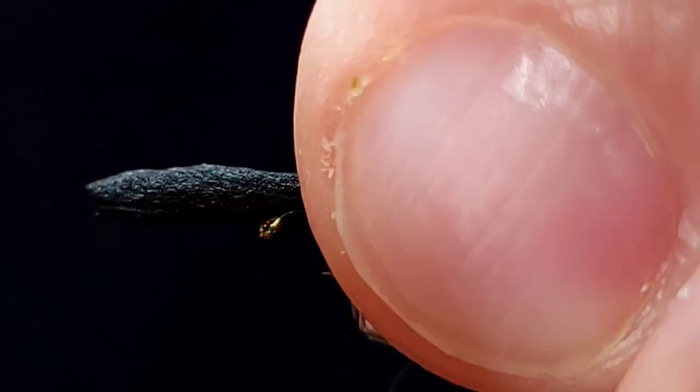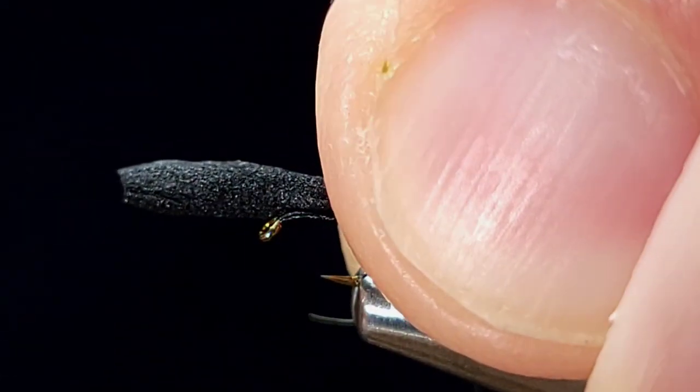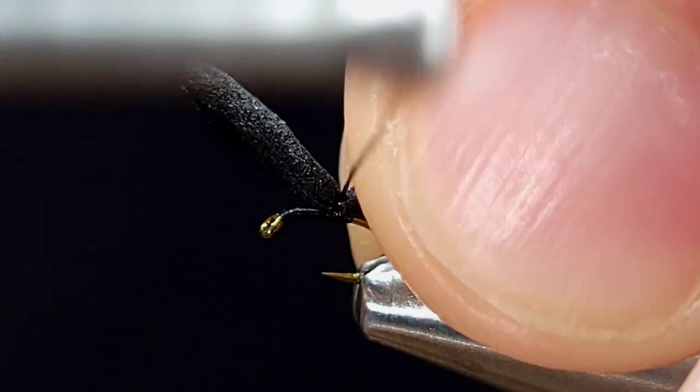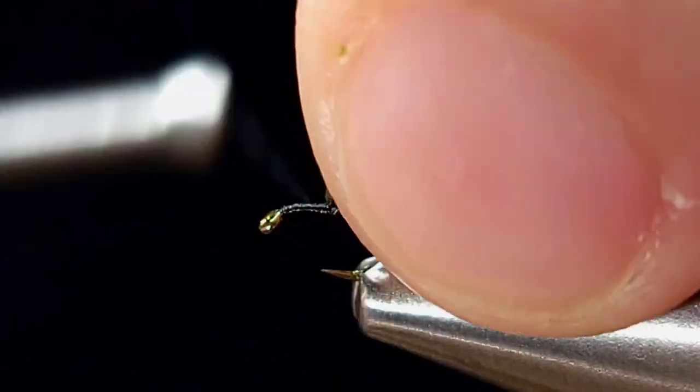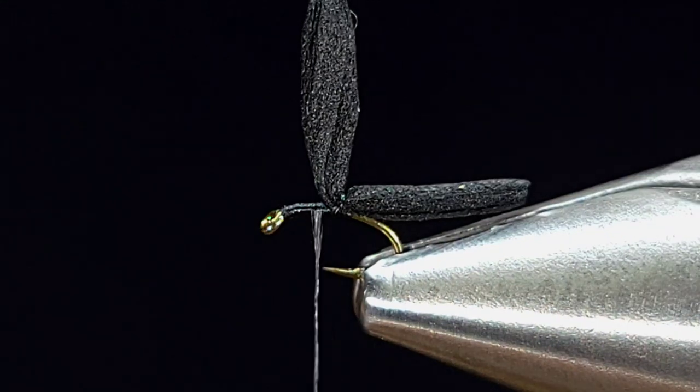I'm going to make the back end of this fly about a full length of the hook, and I'm going to secure it with a couple wraps. Then I'm going to move my thread in front of the piece of foam and let it hang.